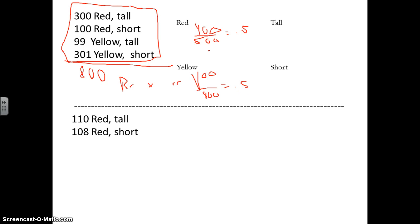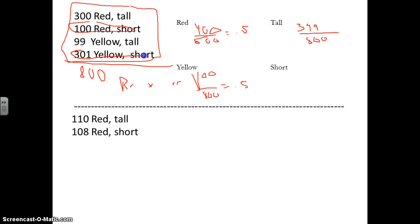Now we're going to take a look at the tall-short trait to see the ratio. We still have 800 offspring. How many are tall? There are 300 that are tall here, and then there are 99 that are tall here, so that's 399 over 800. And then how many are short? We have 100 here that are short and 300 here that are short, so that's 401 over 800. That's also very close to a 50-50 ratio.